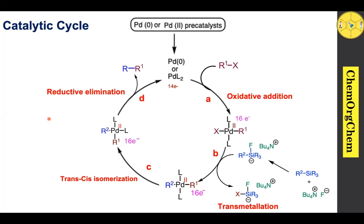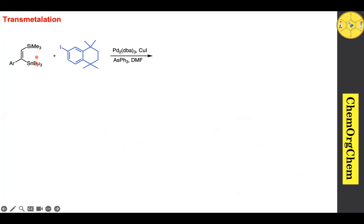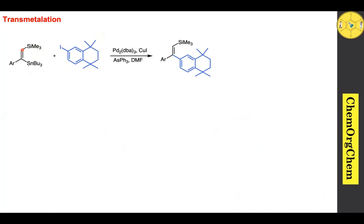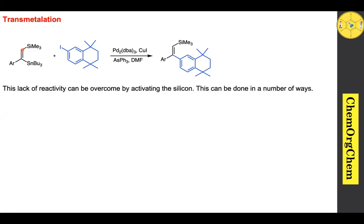Now we are going to discuss in more depth how transmetallation takes place in the Hiyama cross-coupling reaction. Consider a reaction where an alkenyl substrate has both a silyl group and a tin-based group. When reacted with an iodo compound under palladium(0) conditions, coupling readily occurs with the organotin species rather than the silyl species, because of the lower reactivity of the silicon-carbon bond. This ultimately requires an activating reagent to enhance the reactivity of silanes.